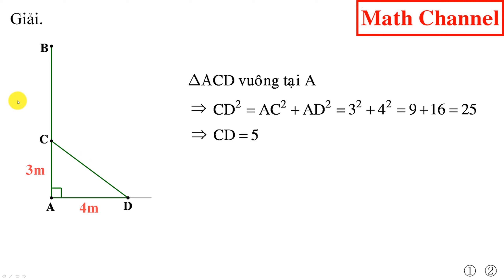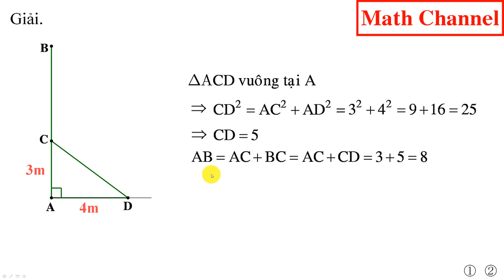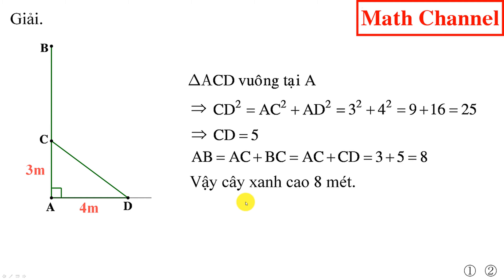Từ đây chúng ta có thể tính được độ dài của AB. AB chính là bằng AC cộng với BC, hay nói cách khác là bằng AC cộng với đoạn CD. Thay số vào thì chúng ta được kết quả là 8m. Từ đây chúng ta kết luận: chiều cao của cây xanh là 8m.